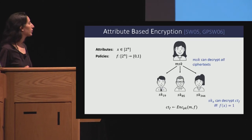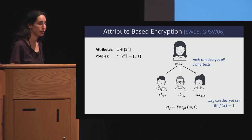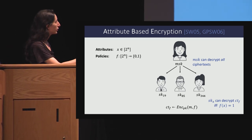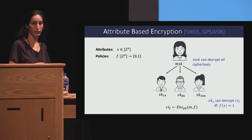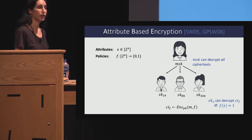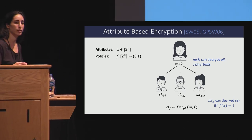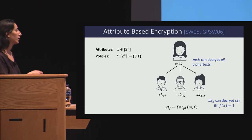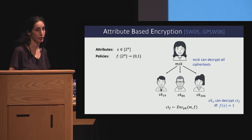Attribute-based encryption is a public key encryption system where there are multiple users that have different secret keys. The idea is that you can encrypt a message in such a way that only some of them are authorized to decrypt the message.